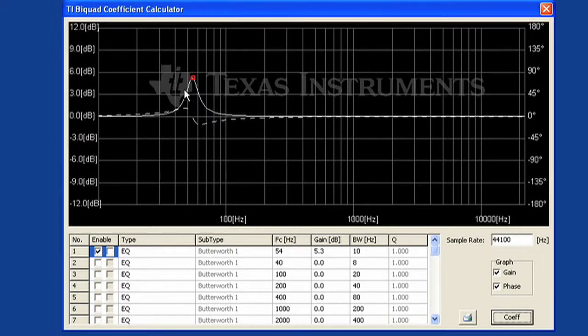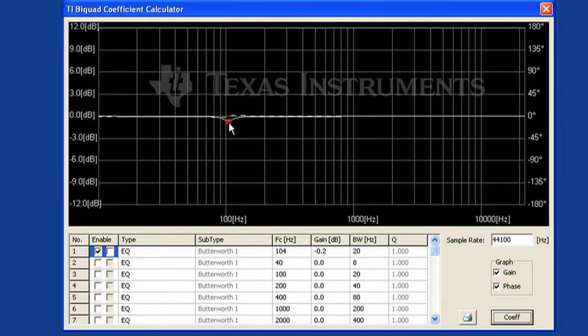The solid line is the frequency response and the dotted line is the phase response. You can drag the control point to change the filter characteristics, like center or cutoff frequency, gain and bandwidth.